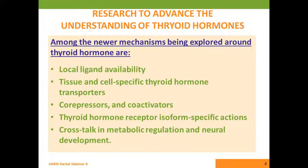Thyroid hormones and receptors might have different isoforms, meaning that thyroid hormone might be able to bind to different sorts of thyroid receptors. Just as we've been looking at estrogen and finding alpha estrogen receptors and beta estrogen receptors, there are different forms — slightly different molecular shapes to that coil of protein that is a hormone receptor — which is referred to as its isoform.